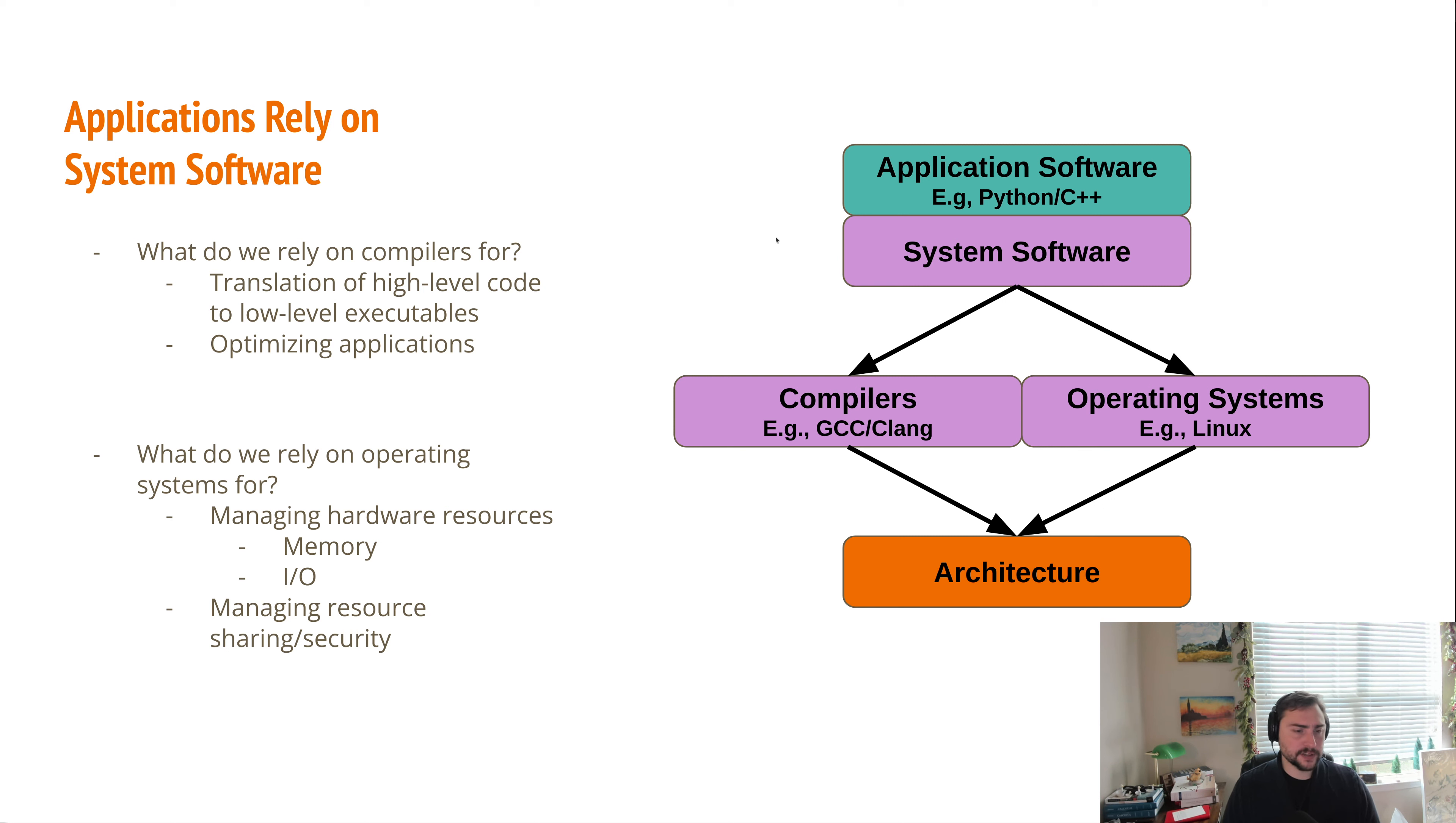Now, our system software is made up of a number of different components. Two of the major ones being our compilers, so things like GCC and Clang, and our operating systems, things like Linux.